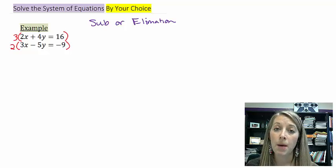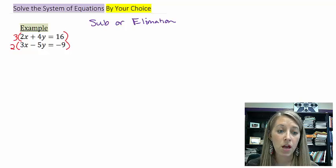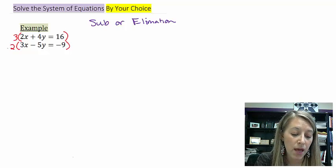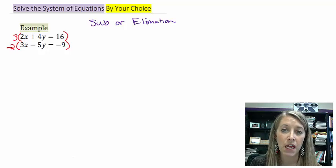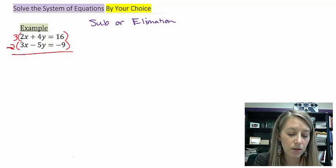This will give me the same numbers in both coefficients of X, which will give me 6. But I want them to be opposite signs, so when I add them, they eliminate themselves. So it doesn't matter which one. Multiply one of them by a negative. I'm just going to multiply the second one by a negative 2.